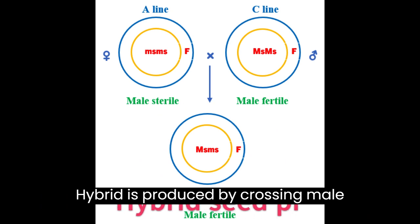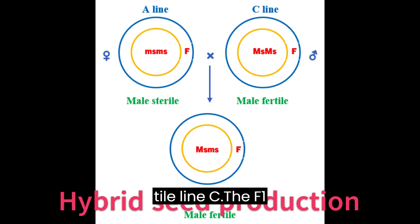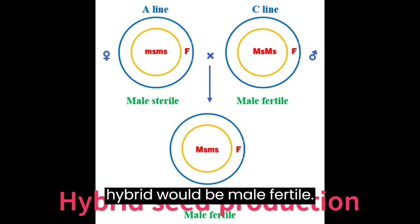The hybrid is produced by crossing male sterile line A with homozygous male fertile line C. The F1 hybrid would be male fertile.